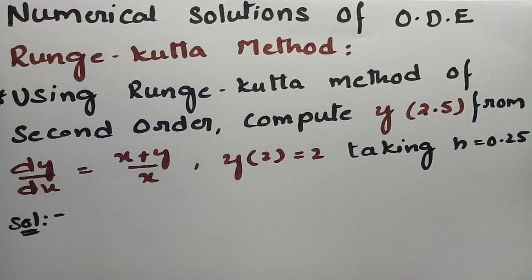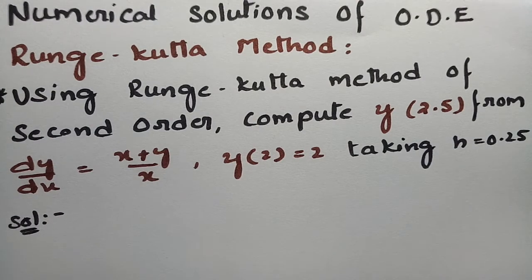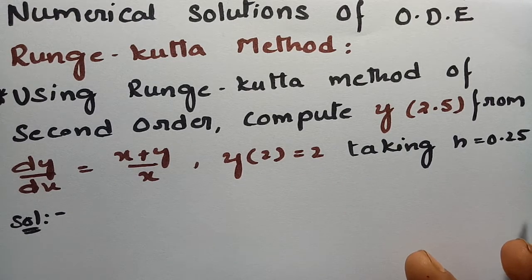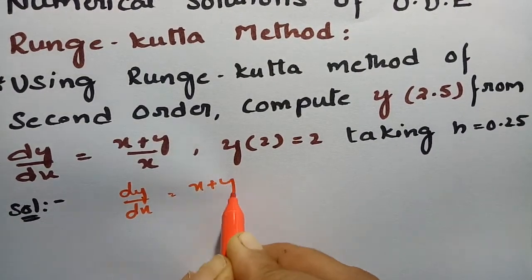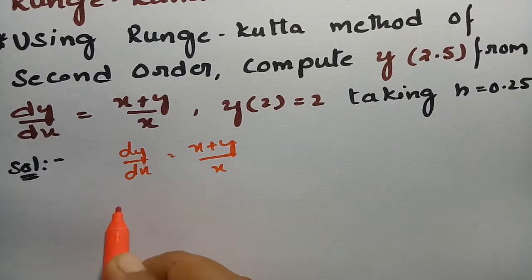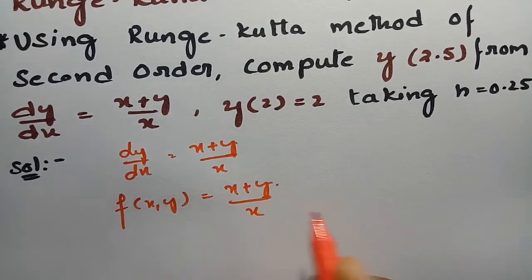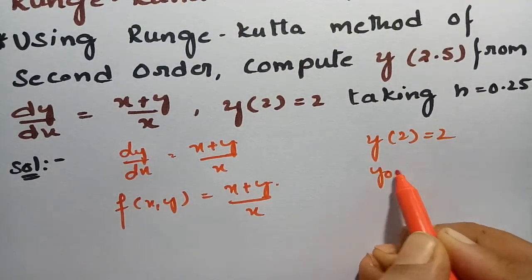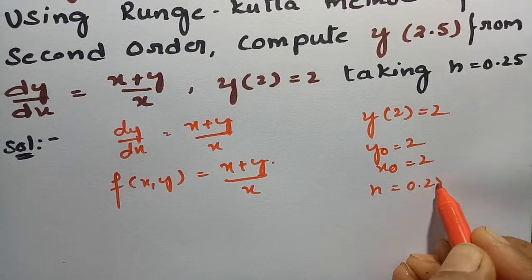Using Runge-Kutta method, or RK method of second order, we have to compute y at 0.5 from dy/dx = x + y/x, where y(2) = 2, taking h = 0.25. So dy/dx = x + y/x, which we consider as f(x, y) = x + y/x. It is given that y(2) = 2, which means y₀ = 2, x₀ = 2, and h = 0.25.